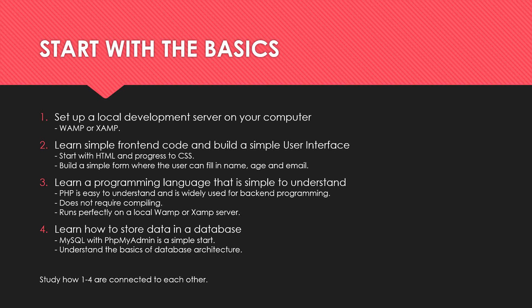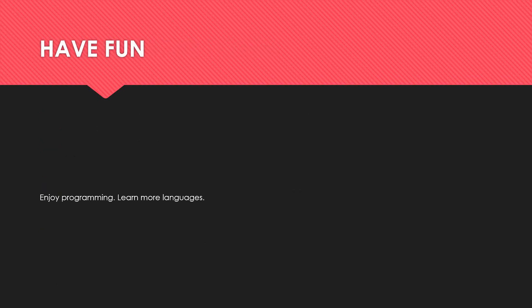Finally, study how parts one through four are connected to each other. For example, how does the user interface communicate with the backend? How can you send data from a form on the front end to the back end? How is the front end and back end connected to the web server, and how is the web server run on the server? These are things you should know. So this 'start with the basics' approach is a simple way to get started by following these steps. Have fun, enjoy programming, and learn more languages and new stuff. I hope you learned something — just follow these steps, let it take a couple of months, don't stress, and you should with no problem be able to work in a professional web development job. Good luck, bye bye!